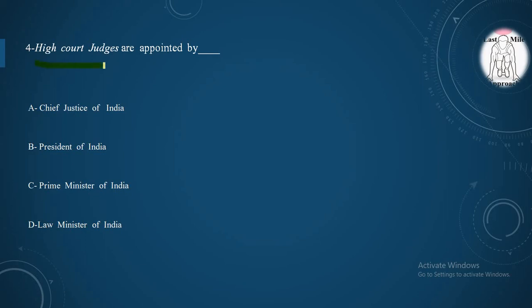Next, High Court Judges are appointed by Option A, Chief Justice of India. Option B, President of India. Option C, Prime Minister of India. Option D, Law Minister of India. And the correct option is Option B, President of India appoints the judges of the High Court.